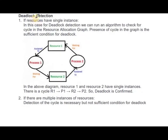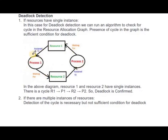Next comes deadlock detection. If resources have a single instance, we can run an algorithm to check for a cycle in the resource allocation graph. The presence of a cycle in the graph is a sufficient condition for deadlock. If there is a cycle in the resource allocation graph, there is a chance of deadlock — not necessarily, but there is a chance.